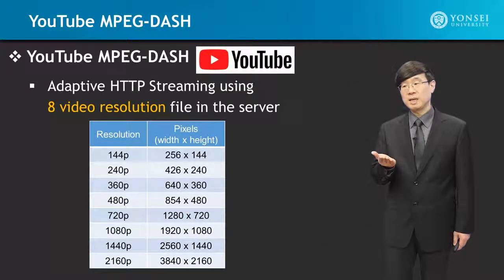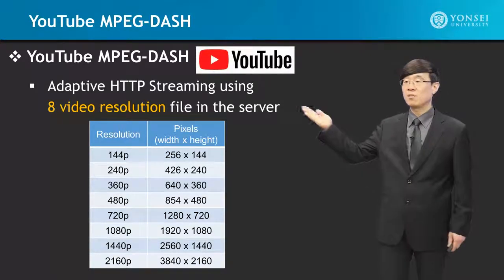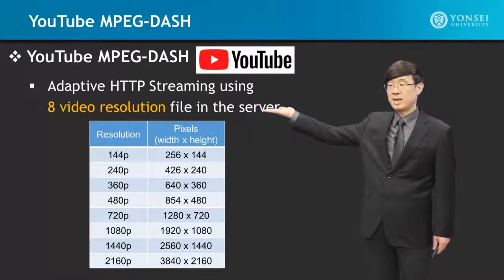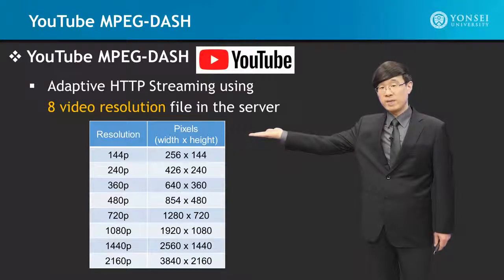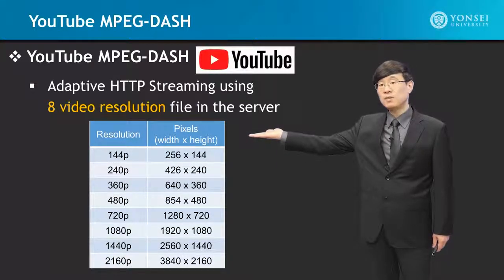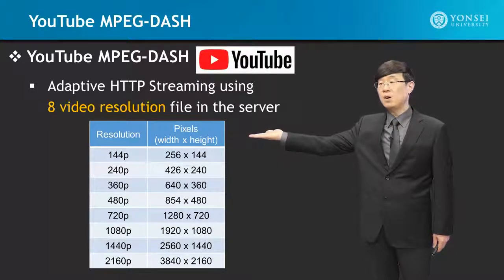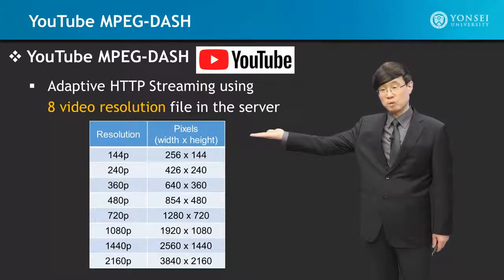What is this 'p'? This is showing the number of pixels, as you can see right here. The pixel structure of an image has a width. For the 144p case, you can see that it is a 256x144 pixel image, and the 144 is what becomes the reference for the 144p resolution.